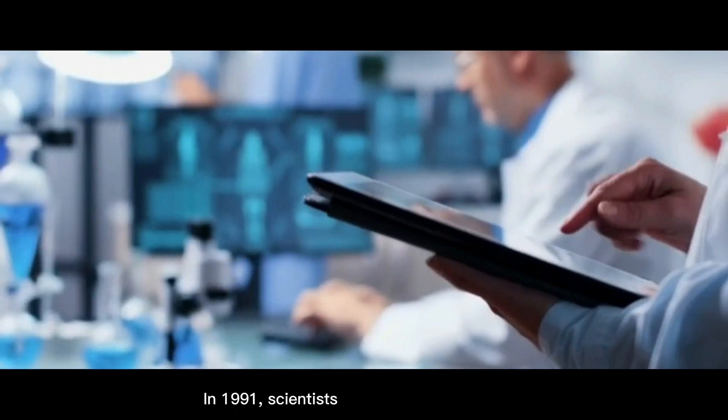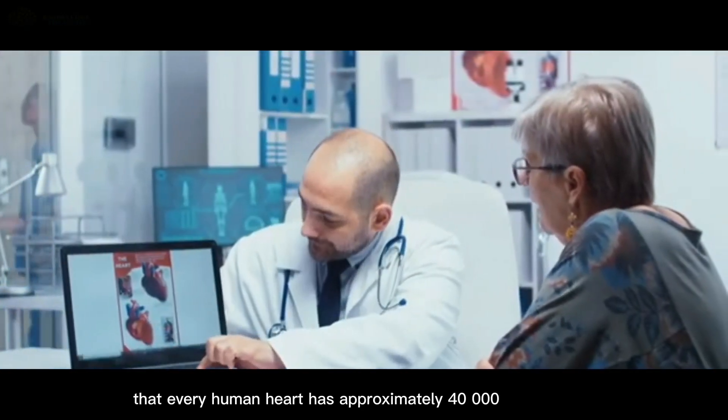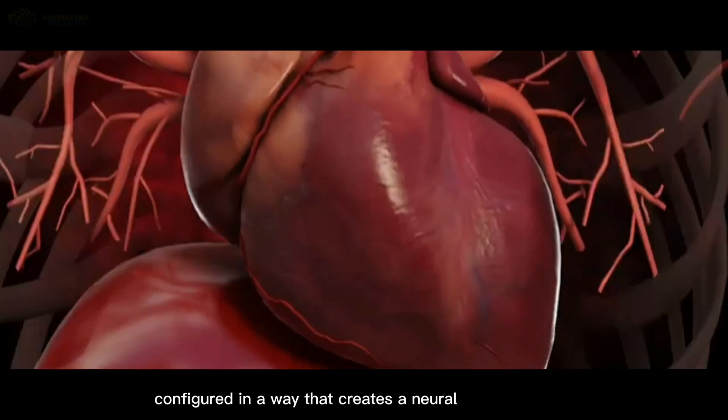In 1991, scientists made a discovery that every human heart has approximately 40,000 or so specialized cells configured in a way that creates a neural network in the heart.